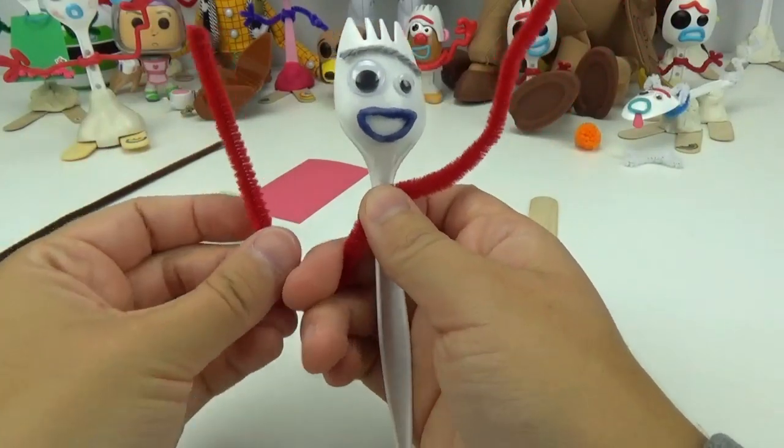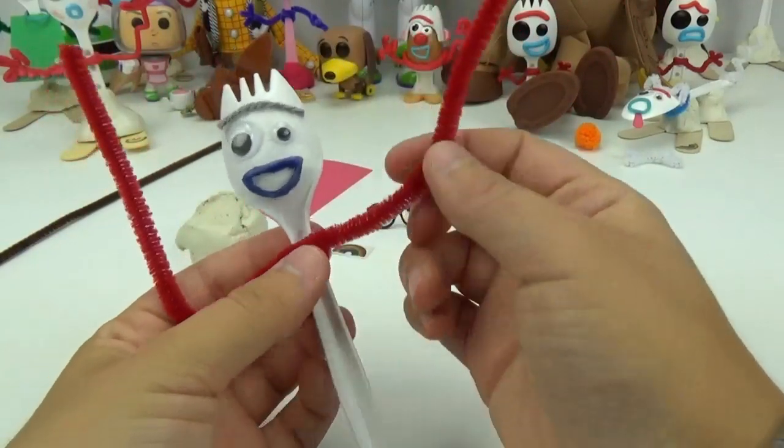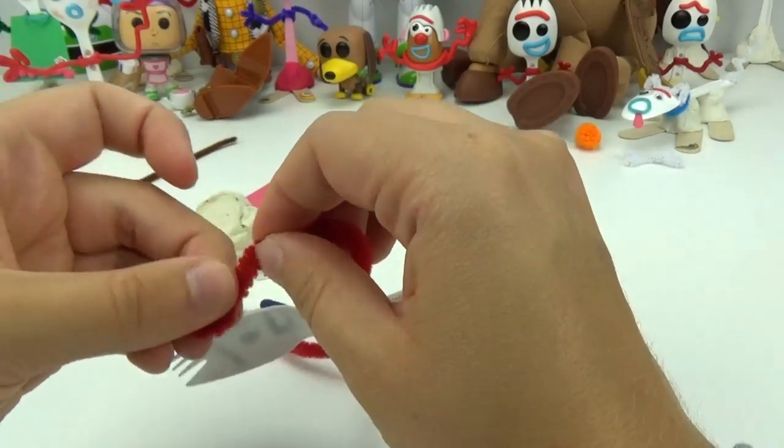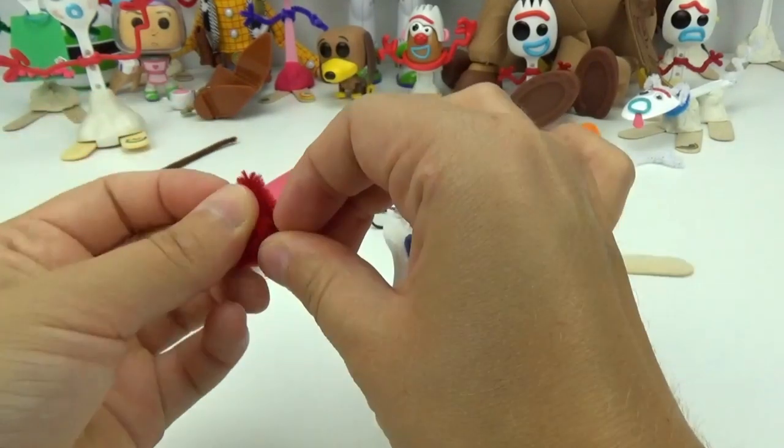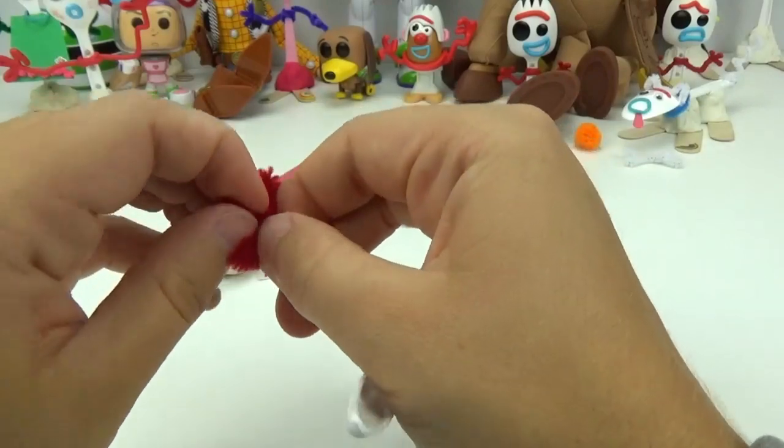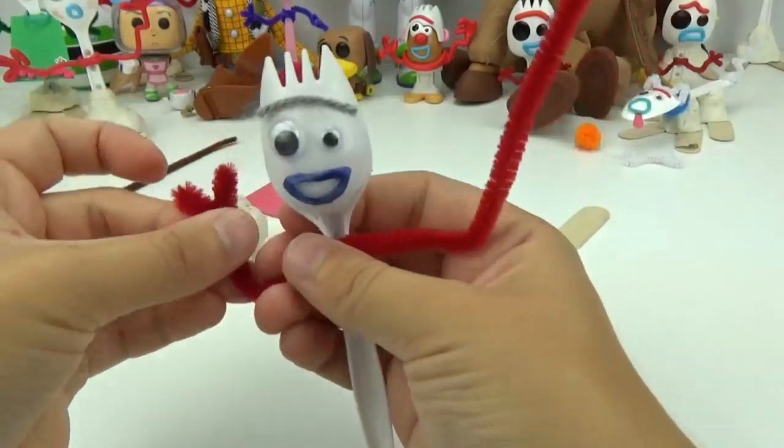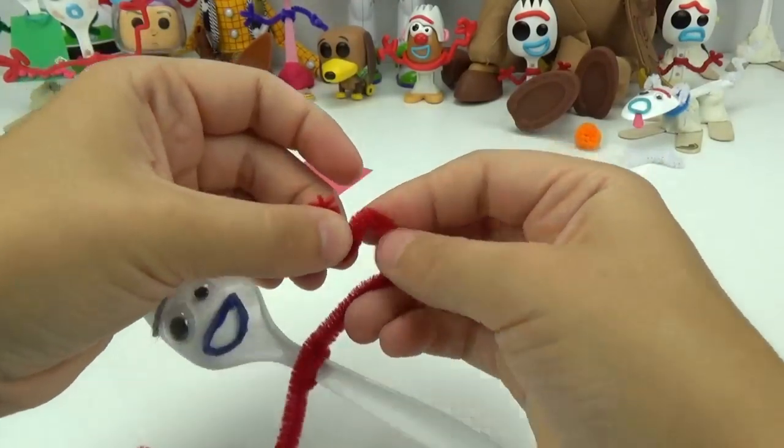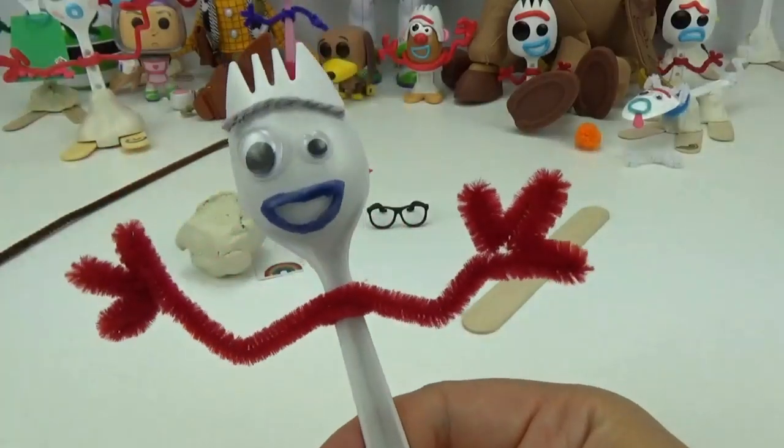With that set, I can form his arms and hands. I will form three points as his fingers. Just like that!